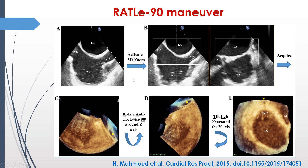If you are using three-dimensional TEE, here we come to our proposed maneuver: the RATL-90 maneuver. RATL stands for Rotate, Anti-clockwise, Tilt, Lift. 90 because all the motions will be 90 degrees. So: Rotate Anti-clockwise, Tilt, Lift — for 90 degrees. RATL-90 maneuver.